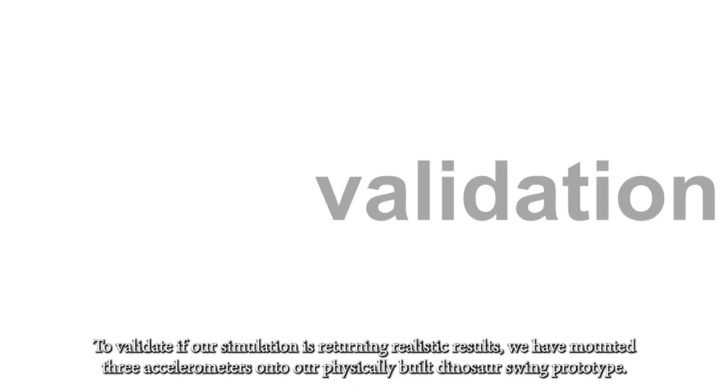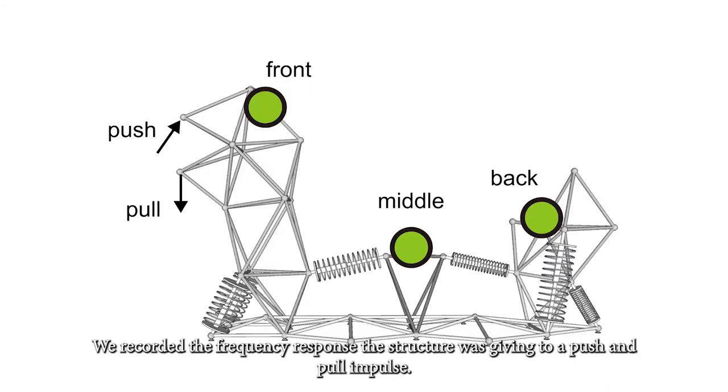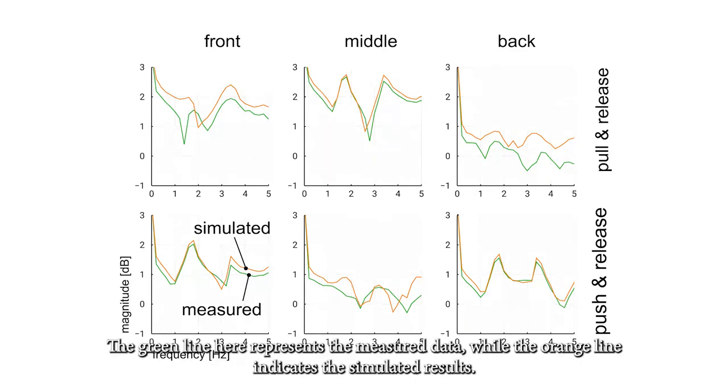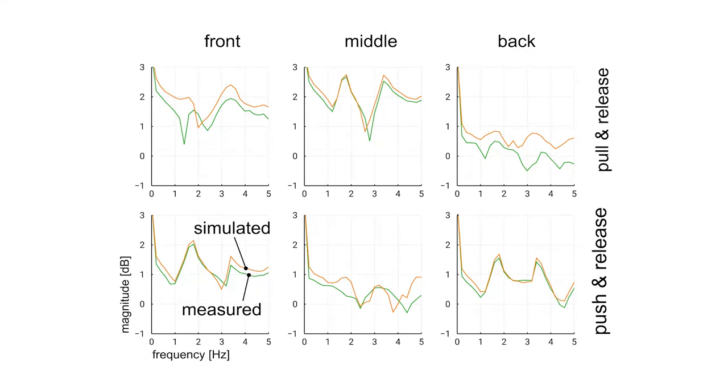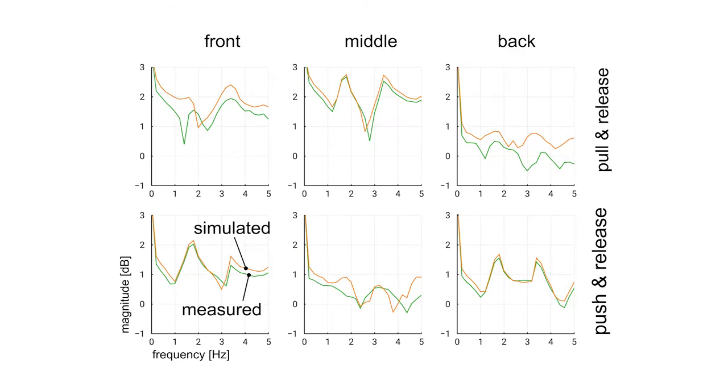To validate if our simulation is returning realistic results, we have mounted three accelerometers onto our physically built dinosaur swing prototype. We have recorded the frequency response of the structure when giving it a push and pull impulse. We have plotted the results in the frequency domain. The green line here represents the measured data, while the orange line indicates the simulated results. We can see that the simulation is resembling the measurements closely, therefore we can exclude systematic errors in our simulation.